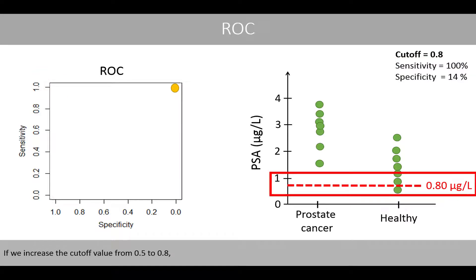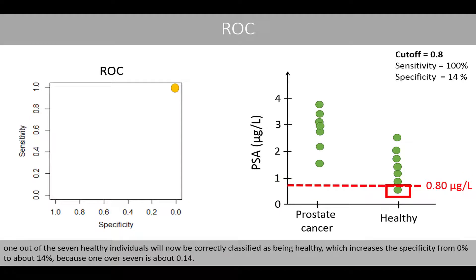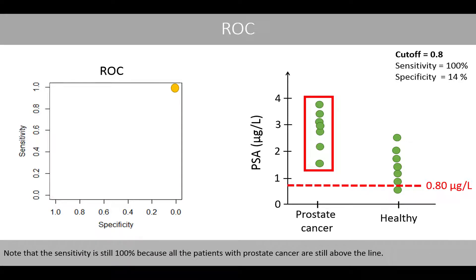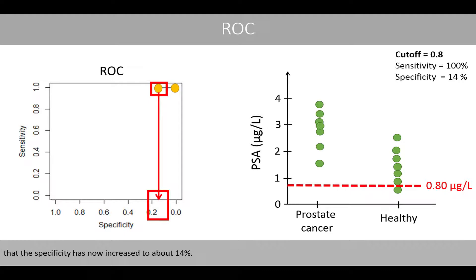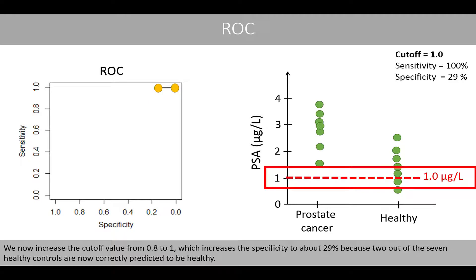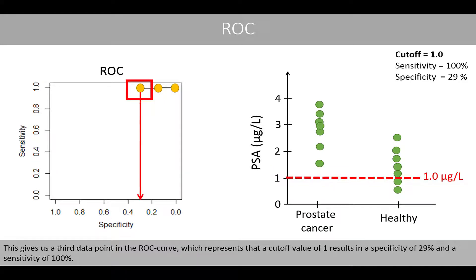If we increase the cutoff value from 0.5 to 0.8, one out of 7 healthy individuals will now be correctly classified as healthy, increasing the specificity from 0% to about 14%. The sensitivity is still 100% because all cancer patients remain above the line. Increasing the cutoff further to 1.0 raises the specificity to about 29%, since 2 out of 7 healthy controls are now correctly predicted to be healthy, while sensitivity remains 100%.